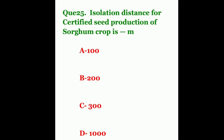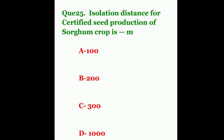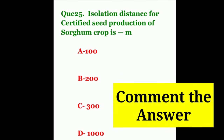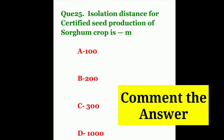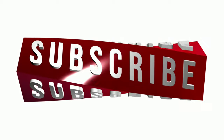Question twenty-five: the isolation distance for certified seed production of sorghum crop is. The options are 100m, 200m, 300m, or 1000m. Please comment your answer to this question. For more videos like this, don't forget to like and subscribe. Thank you.